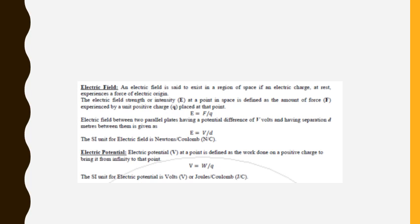If you place a charge Q anywhere in space and the force experienced by this charge is F, then the electric field is defined as E = F/Q. If the unit of force is Newton and the unit of charge is Coulomb, then electric field can be written as Newton per Coulomb. The electric field between two parallel plates having a potential difference V volts and separation D is given as E = V/D, which gives the relation between potential difference and electric field.